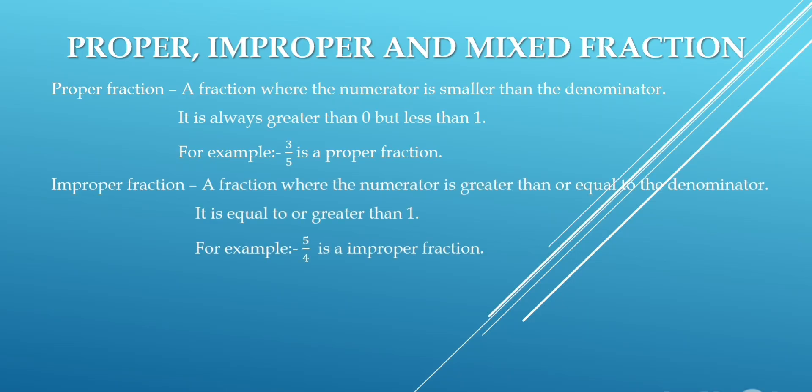Improper fraction: a fraction where the numerator is greater than or equal to the denominator. It is equal to or greater than 1. For example, 5 upon 4 is an improper fraction. Here, 5 is greater than 4.